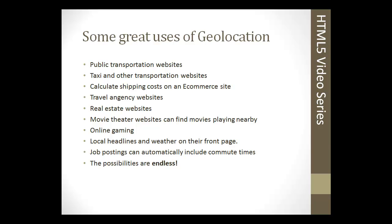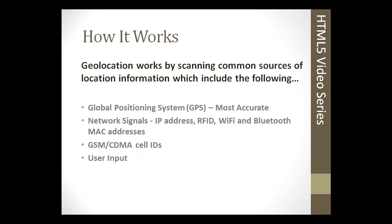Movie theater websites can show listings of movies and theaters in your area. Online gaming, local headlines, and weather are other obvious uses — geolocation allows them to automatically provide content around where you are without you having to input your city or state. Job postings can automatically include commute times and transportation times. There are endless possibilities and countless websites that could use this — it's very useful.